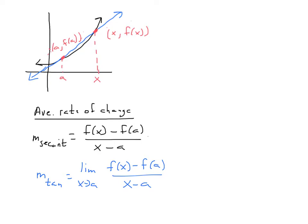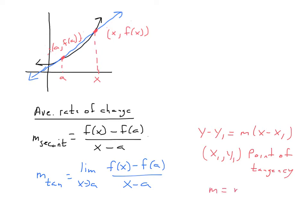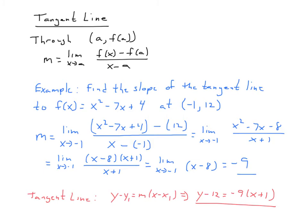Once we have the slope of that tangent line, we can also find the equation of the tangent line. You might remember we have the point-slope form: y minus y₁ equals m times x minus x₁. In this case, x₁ and y₁ represent the point of tangency, and m equals the slope of the tangent line. So the tangent line passes through the point (a, f(a)) and its slope is the limit as x approaches a of f(x) minus f(a) over x minus a.